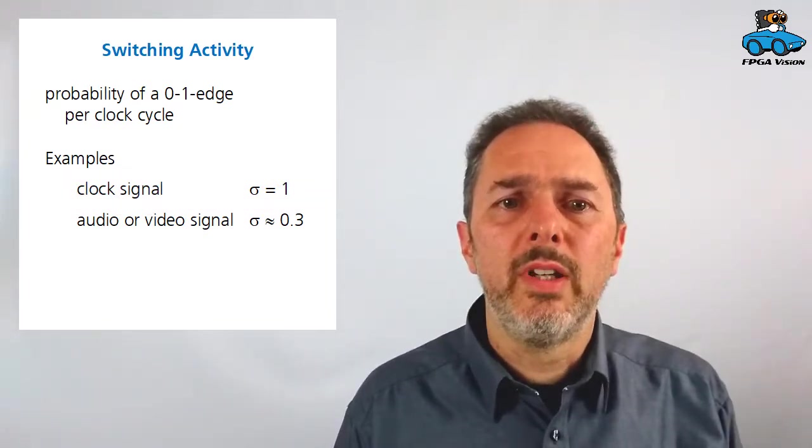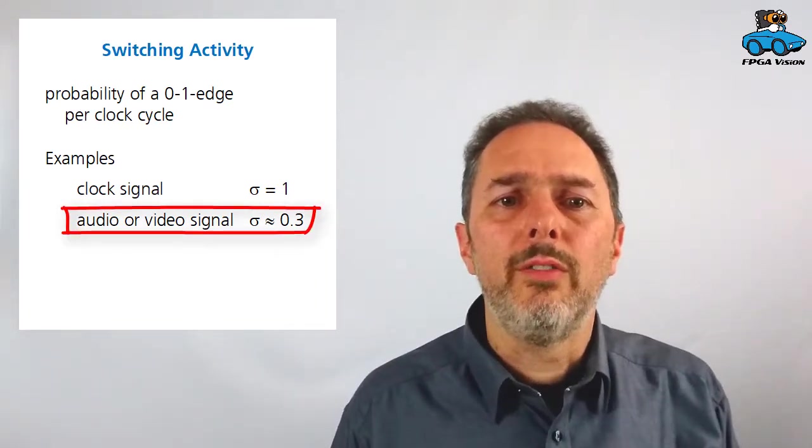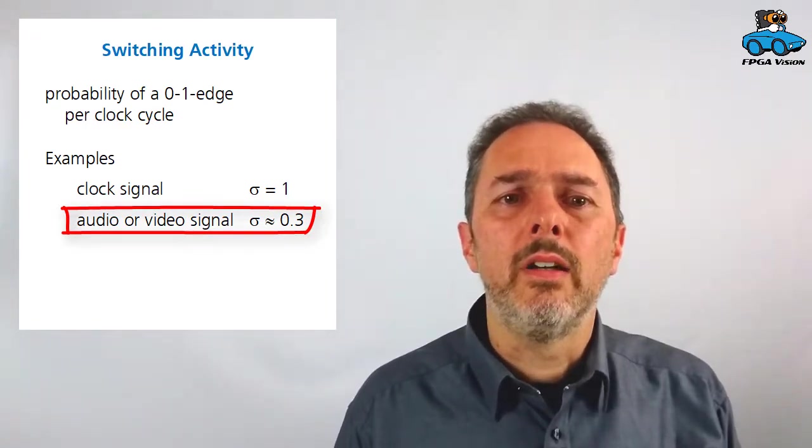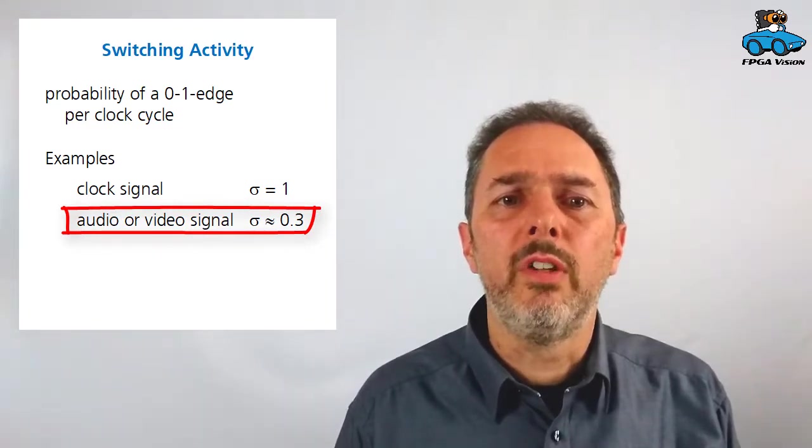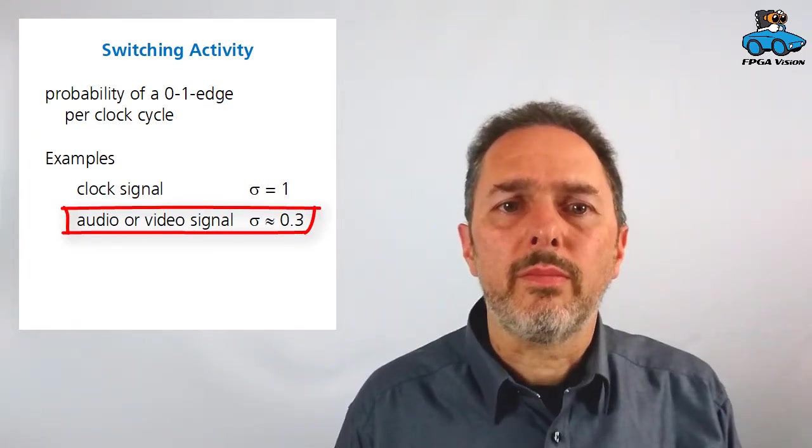For signals that are used in signal processing, like audio or video signals, you can have a look at statistics. You can make measurements of real signals, and there you will find that the statistical value of sigma will be around 30 percent, so 0.3. Because this is a new concept, let's go to the lab and make some measurements. Let's have a look at a real circuit and see how power consumption behaves with some test signals and with a realistic signal.